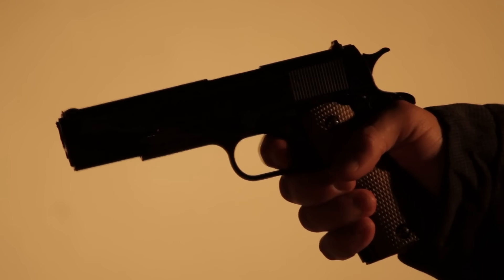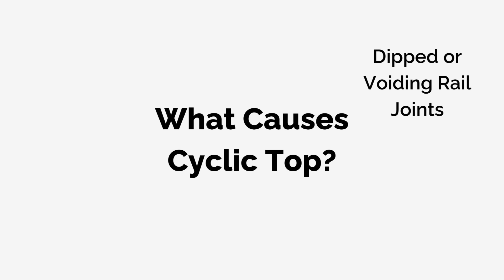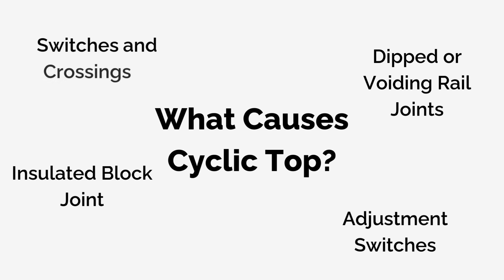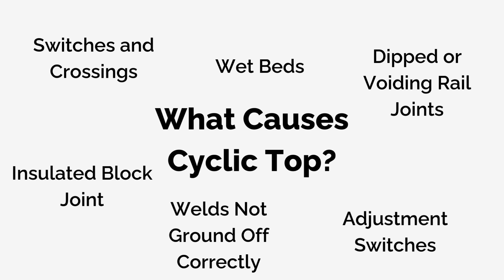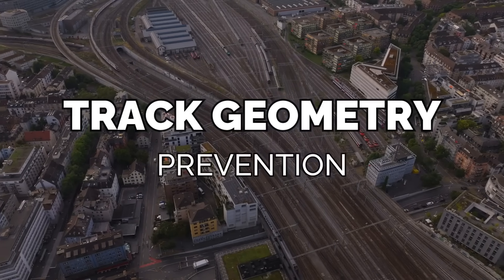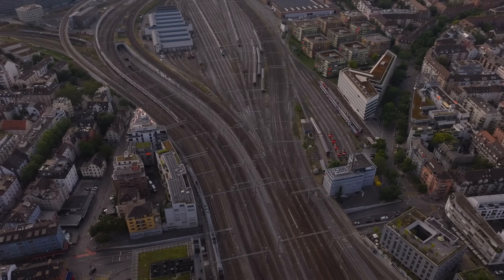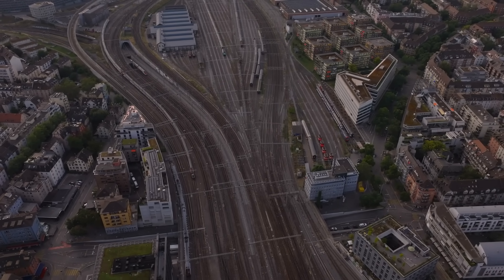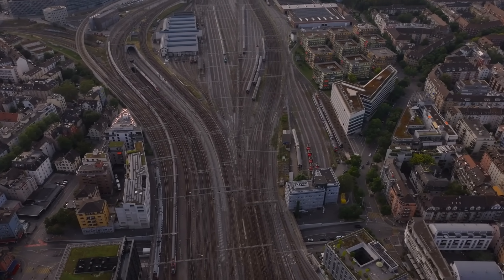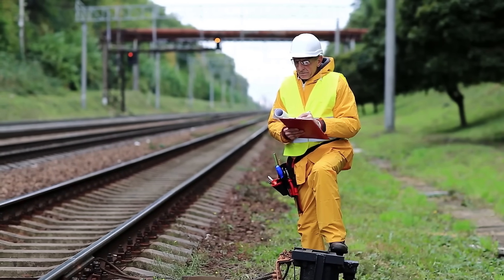The common triggers that start the cyclic top load-unload cycle are dipped or voiding joints, insulated block joints, adjustment switches, switches and crossings — particularly at the nose of a crossing or if voiding is present — welds not ground off to level, and wet beds. Wide gauge, twist, and cyclic top all fall under the track geometry subject area. They all share the same method of prevention through inspection and monitoring using track recording vehicles that take readings of gauge and vertical and horizontal alignment. Measurements are compared to parameters set out in standards, with faults generated for any issues and passed on to maintenance teams.